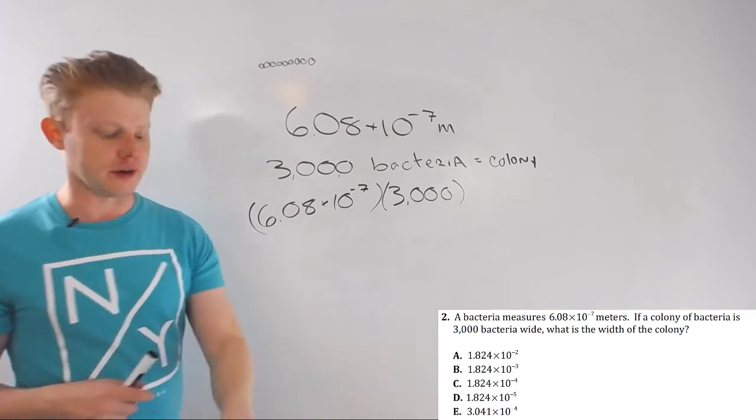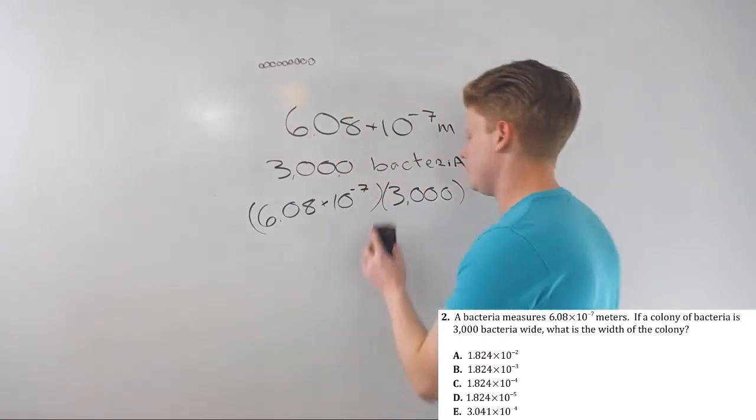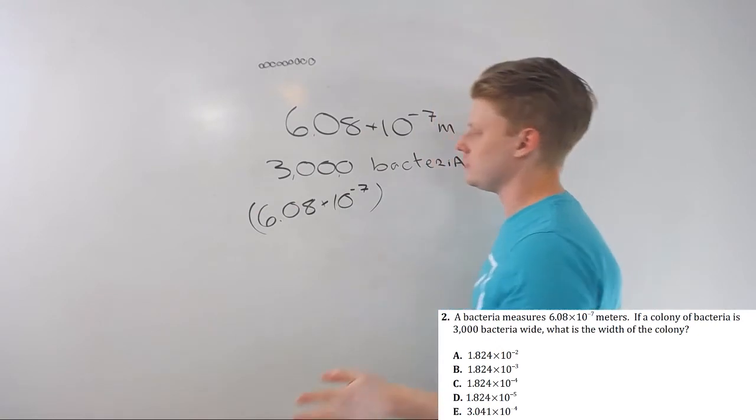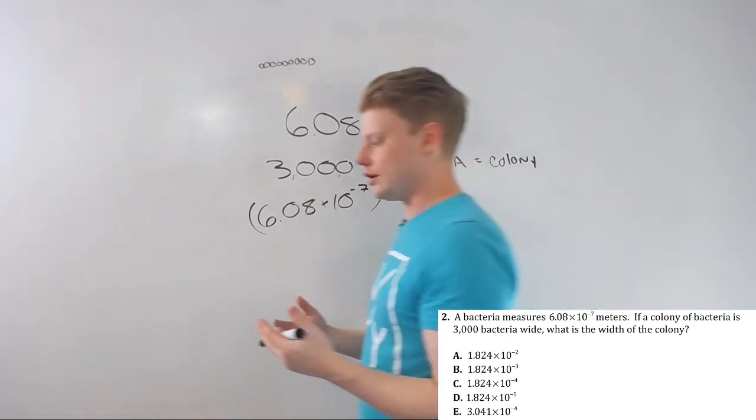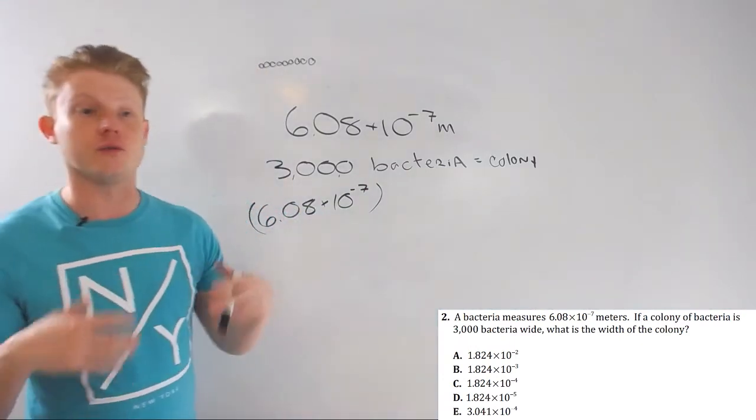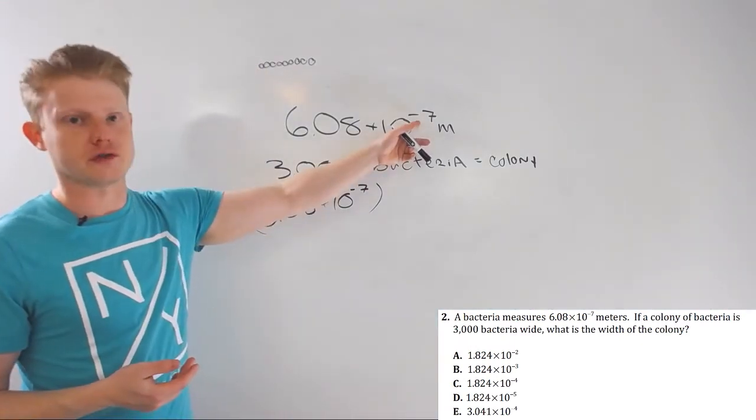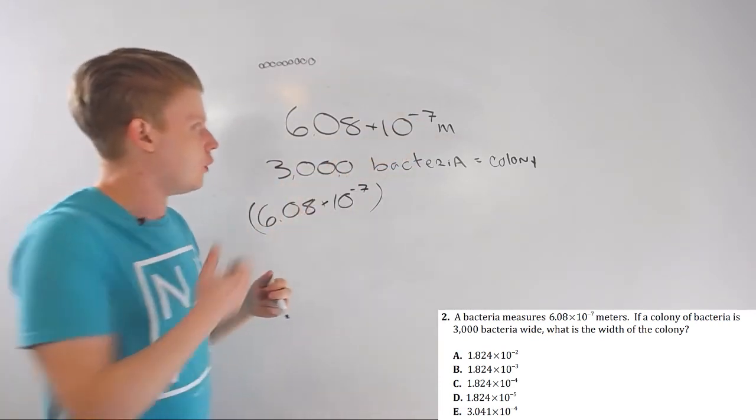Other way to do this, and it's a way I encourage you to at least be comfortable with, is to say, well, let's just do it in the way scientific notation was designed and convert 3,000 into scientific notation. That's why we have scientific notation. It makes large numbers and really small numbers easy to work with. These are incredibly small numbers, right? Makes them easy to work with. So, 3,000 bacteria wide.